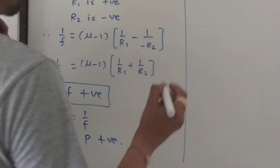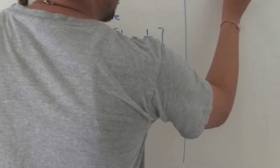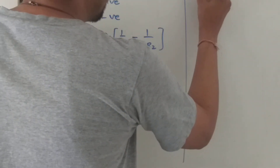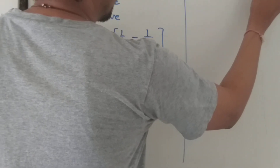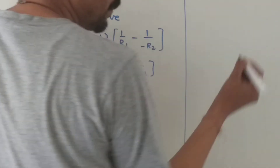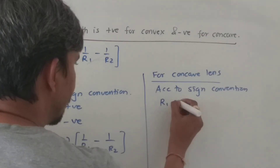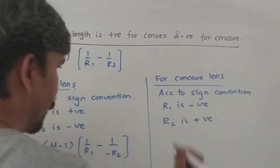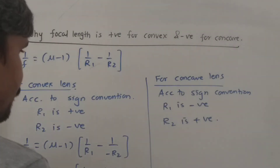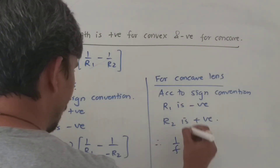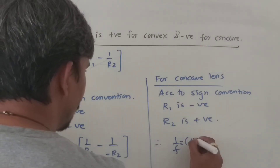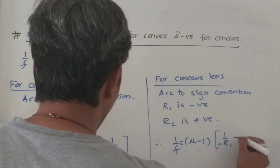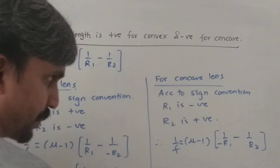Now we will go with the concave lens. For a concave lens, according to sign convention, your R1 is negative and R2 is positive. Substituting the values: 1 by f equals mu minus 1, times 1 upon R1 minus 1 upon R2, because R2 is positive.